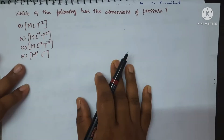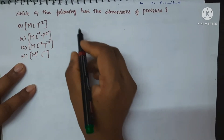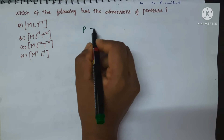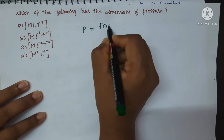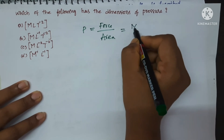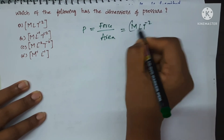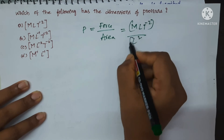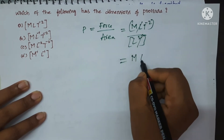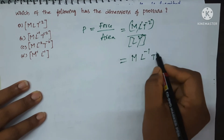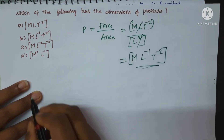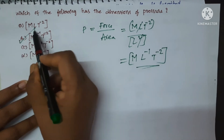Which of the following has the dimensions of pressure? Formula for pressure equals force upon area. Dimensions of force are M L T power minus 2, and for area L square. One L and L cancel, leaving M L power minus 1 T power minus 2. This is the dimensional formula for pressure, and option D is the correct answer.